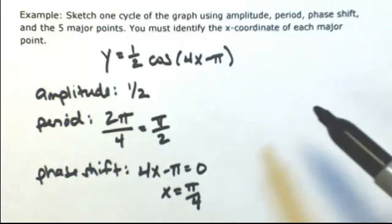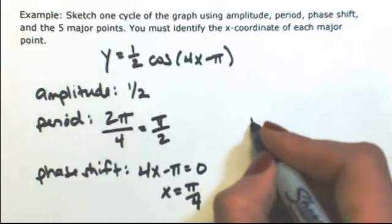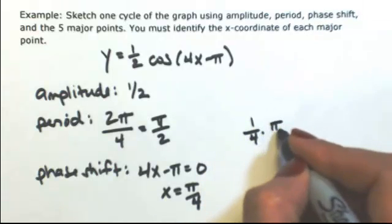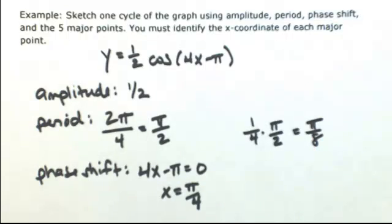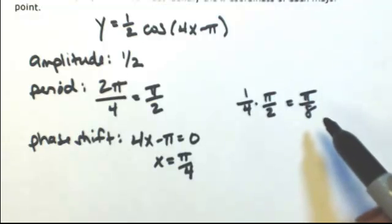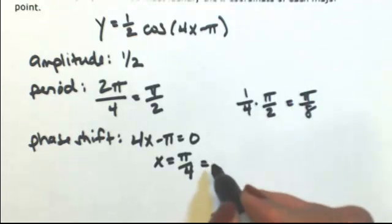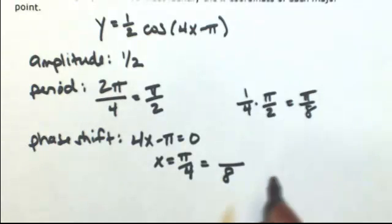To find the x-coordinate, I need to divide up the period into four pieces. So I'm going to take a quarter of the period, which is pi over two, which gives me pi over eight. So starting from the phase shift of pi over four, I'm going to be adding pi over eight four times. So it might help to have a common denominator of eight. So pi over four is the same thing as two pi over eight.